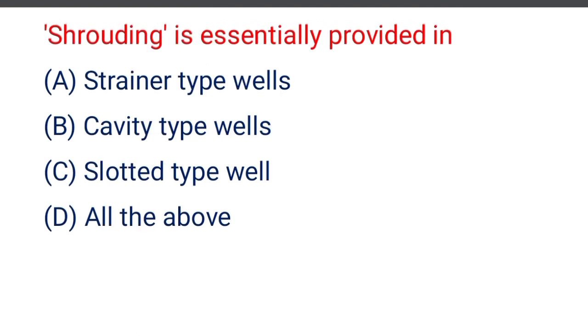Next question: slotting is essentially provided in — option A strainer tube wells, option B cavity type wells, option C slotted type wells, option D all of the above. The correct answer is option C, slotted type wells.